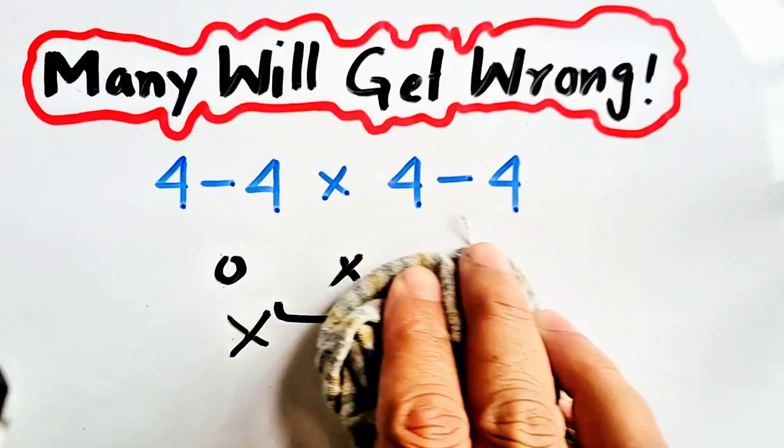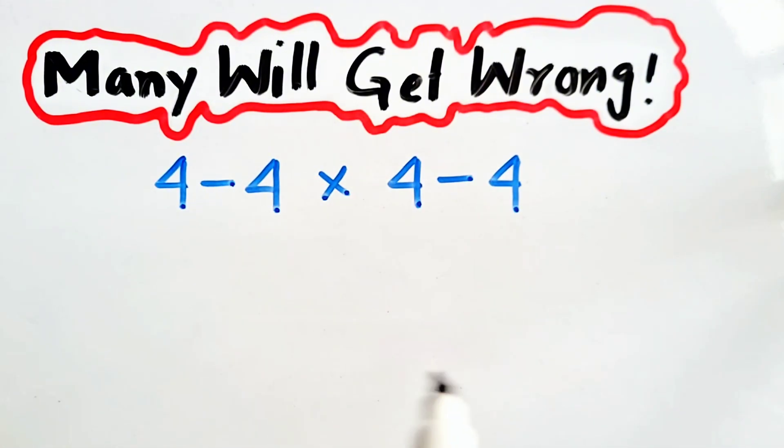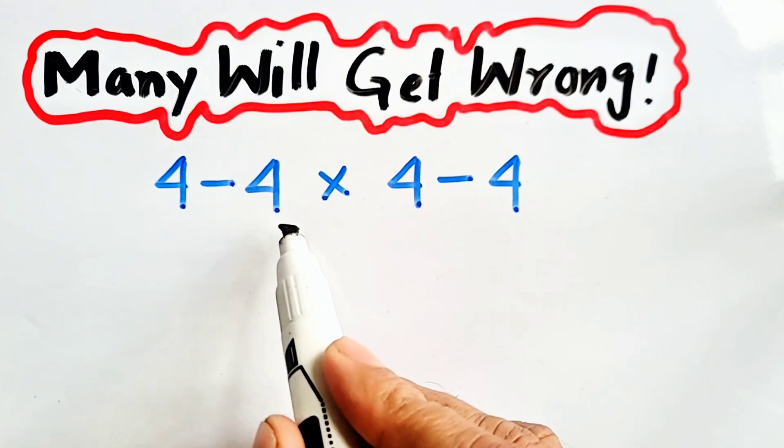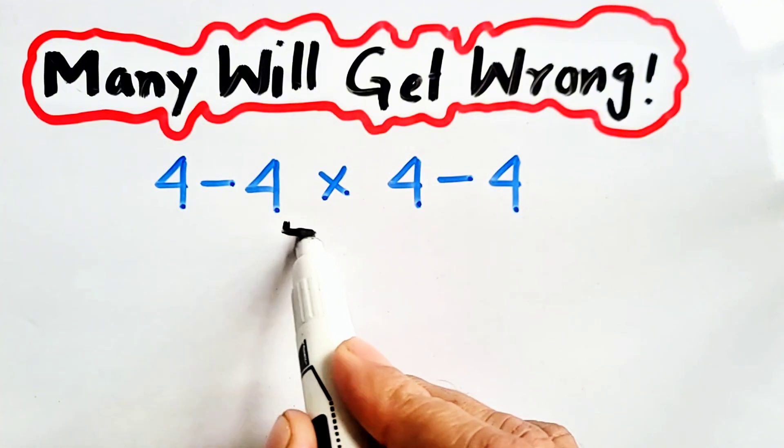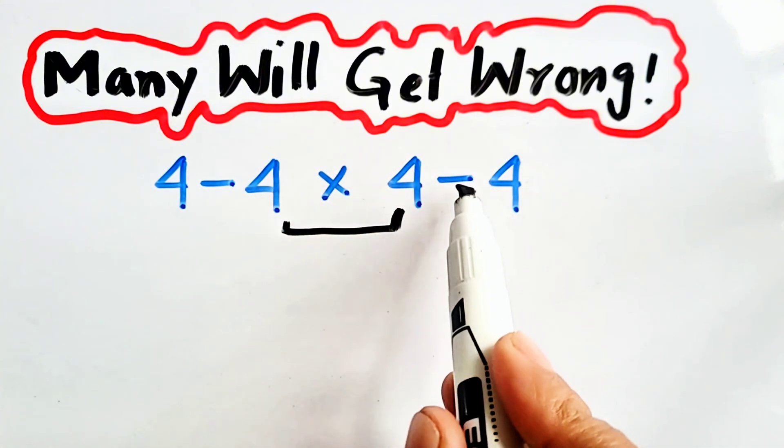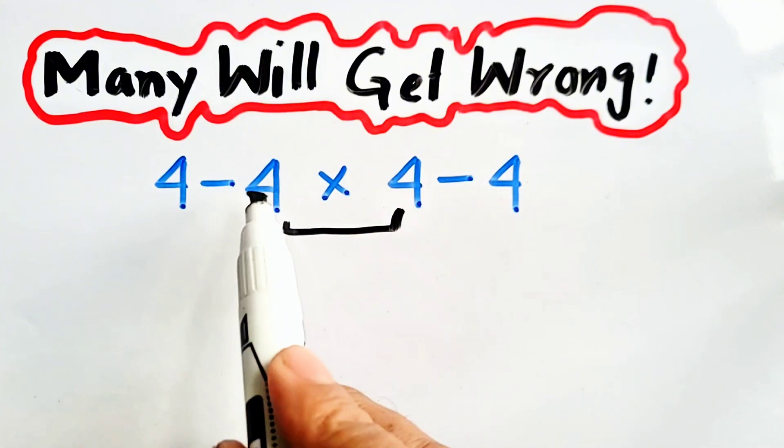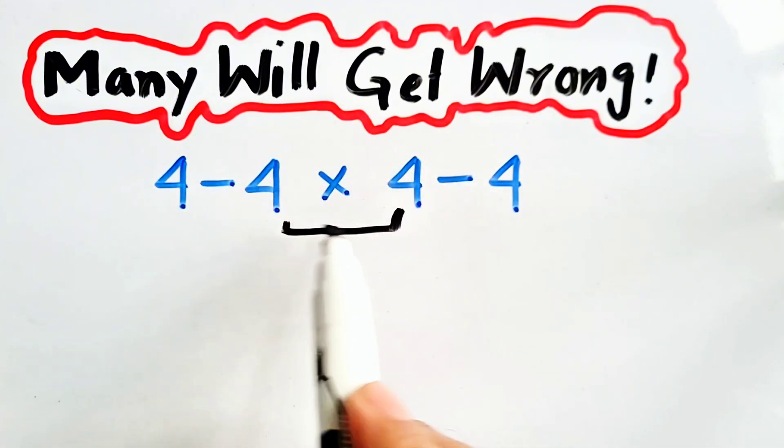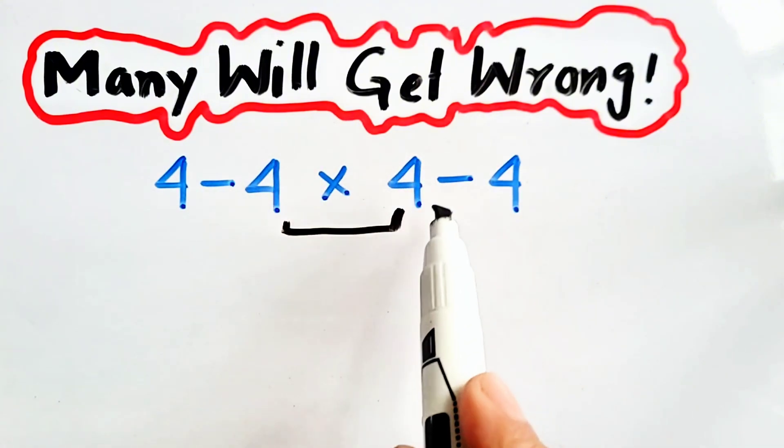To remove that mistake, we will follow order of operations, in which multiplication has to be solved first. We have to prefer multiplication over subtraction. So first of all, we have to solve this portion which contains multiplication.